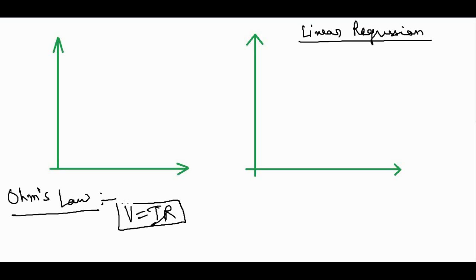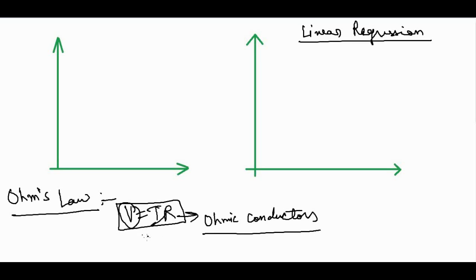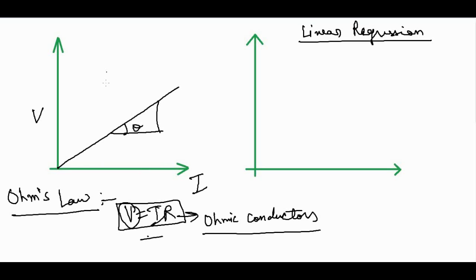The current across the wires of a conductor is directly proportional to the voltage applied across its ends, and this is valid only for ohmic conductors. From this relation, if we draw a curve by plotting various V and I values, we should obtain a straight line passing through the origin, and the slope of this straight line gives us the resistance of the conductor.